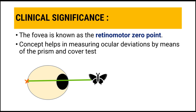The fovea has a retinomotor zero point, and this concept helps in measuring ocular deviation using prism and cover test. When the normal eye is covered, the eye with squint tries to take fixation by bringing the object back on its fovea, making a corrective movement. This is how squint gets corrected during a prism cover test, and the underlying principle is dependent on retinomotor values of retinal elements.